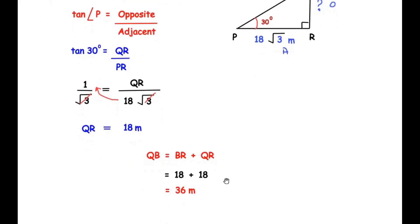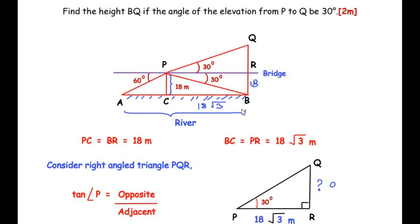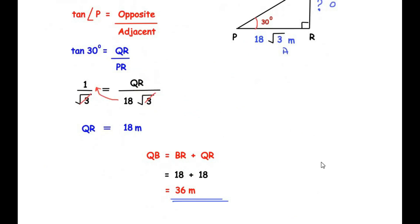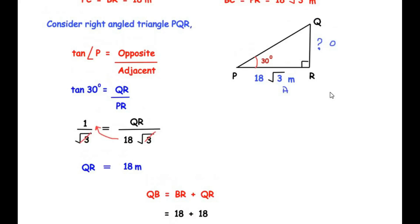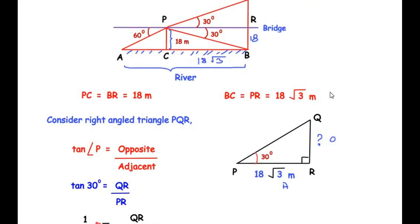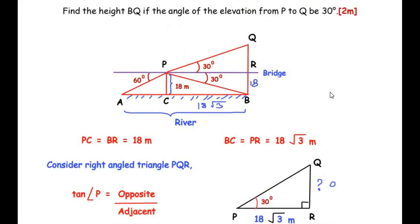The total height BQ = BR + QR = 18 + 18 = 36 meters. I hope you have understood all the steps and liked the video. If you found it useful, check out these playlists for more examples. Like, share, and subscribe to my channel. Thank you for watching.